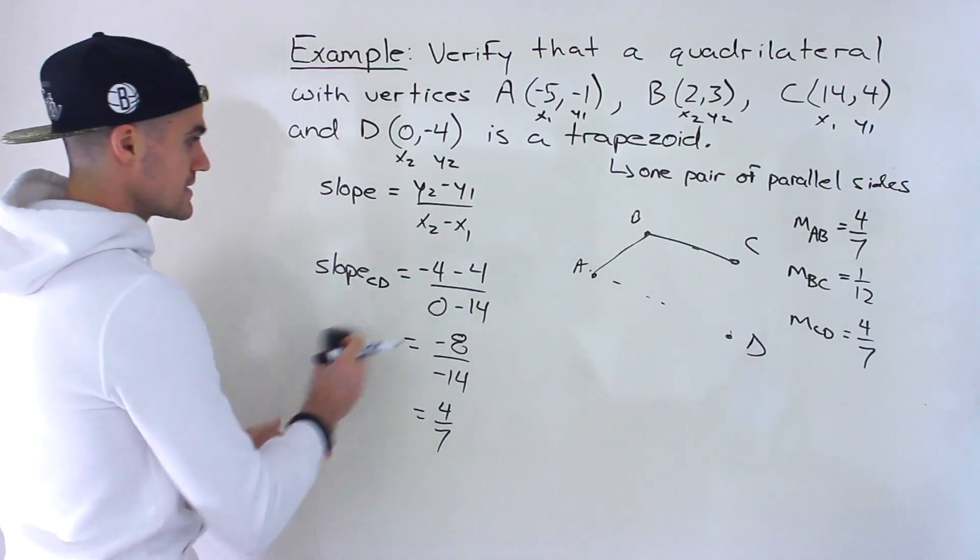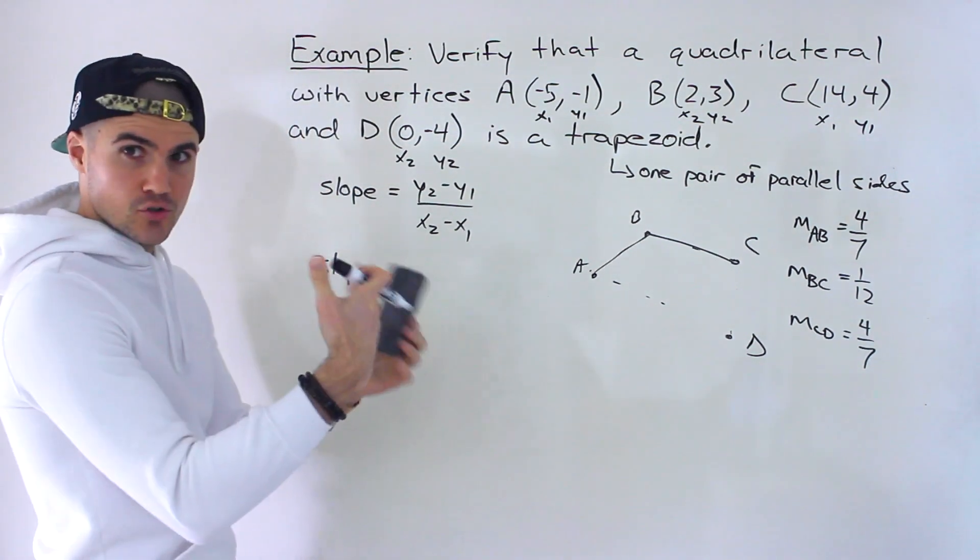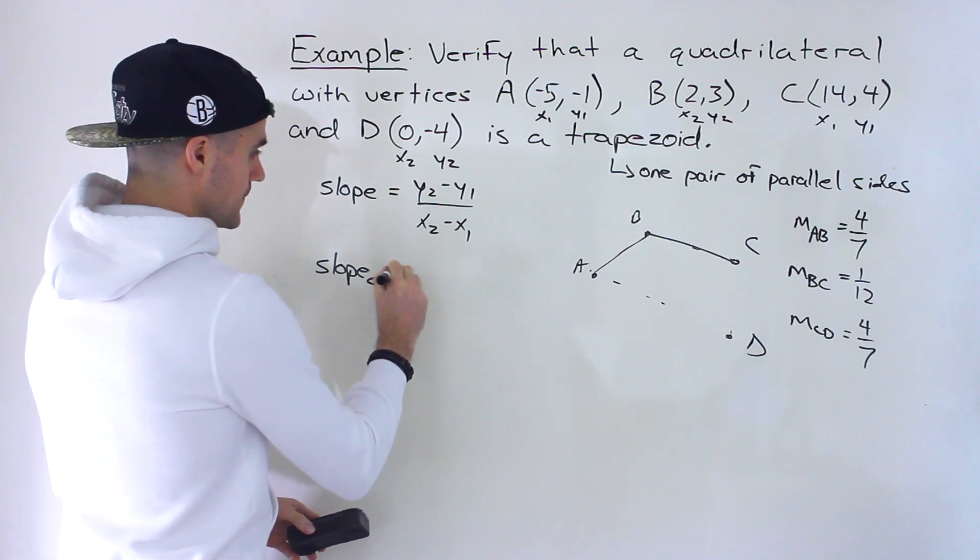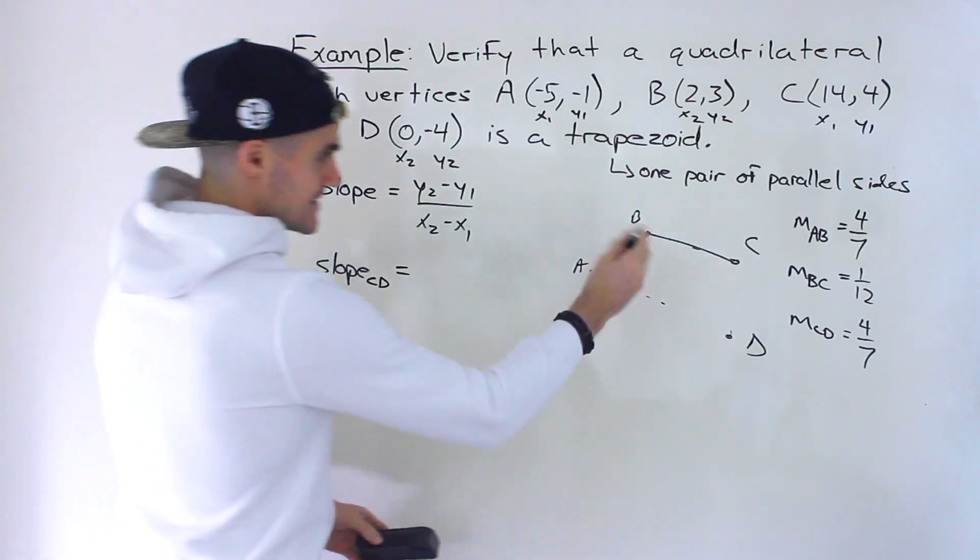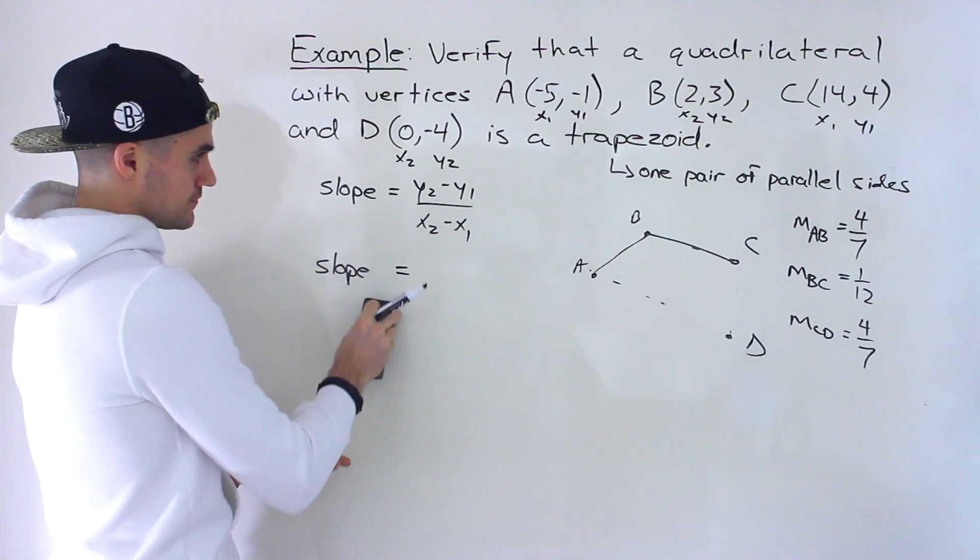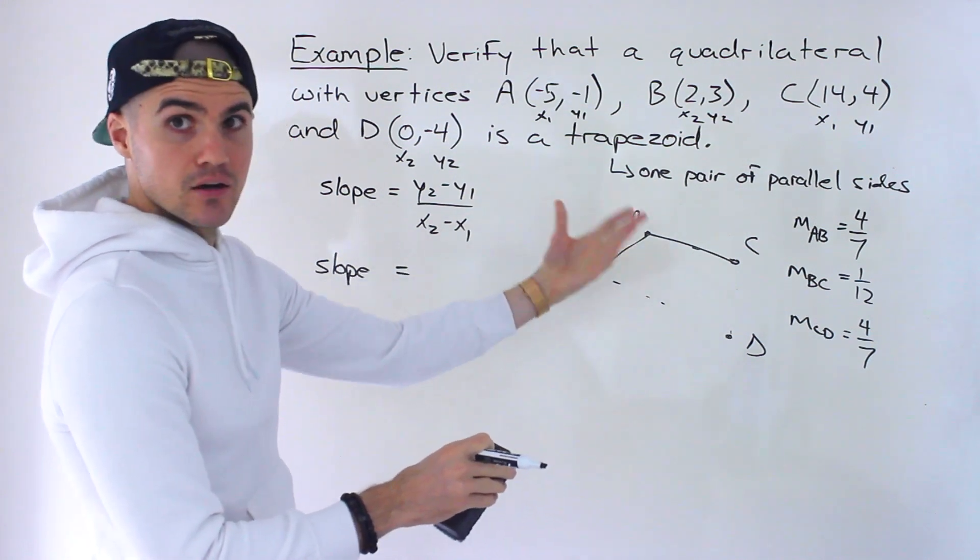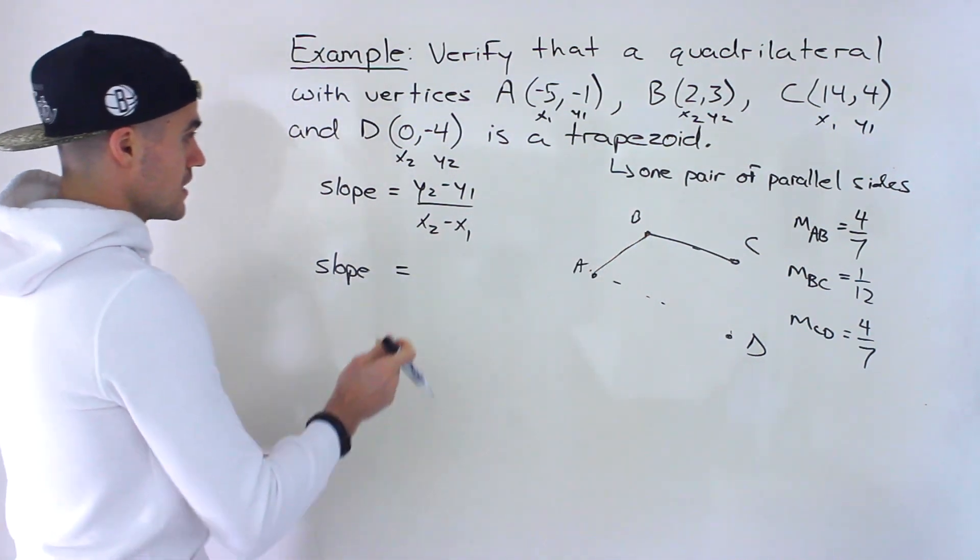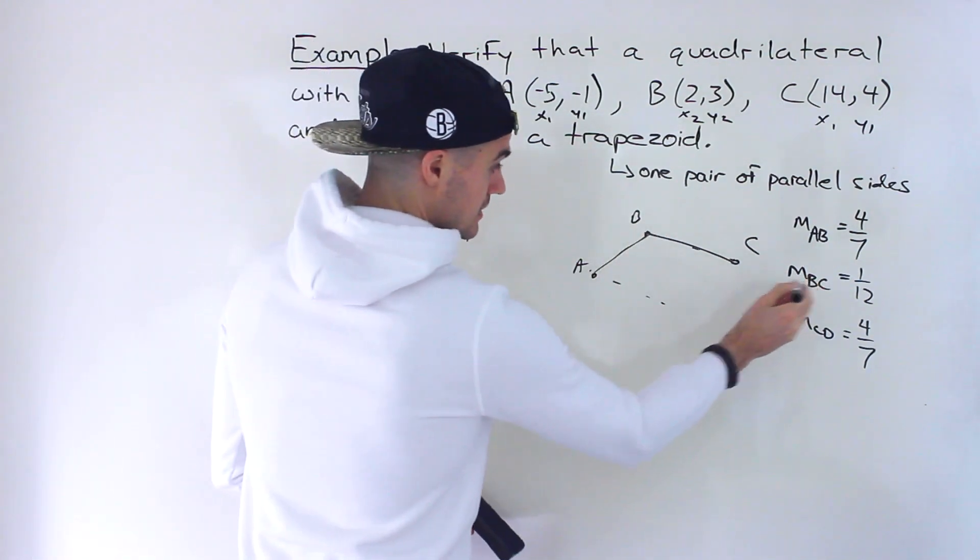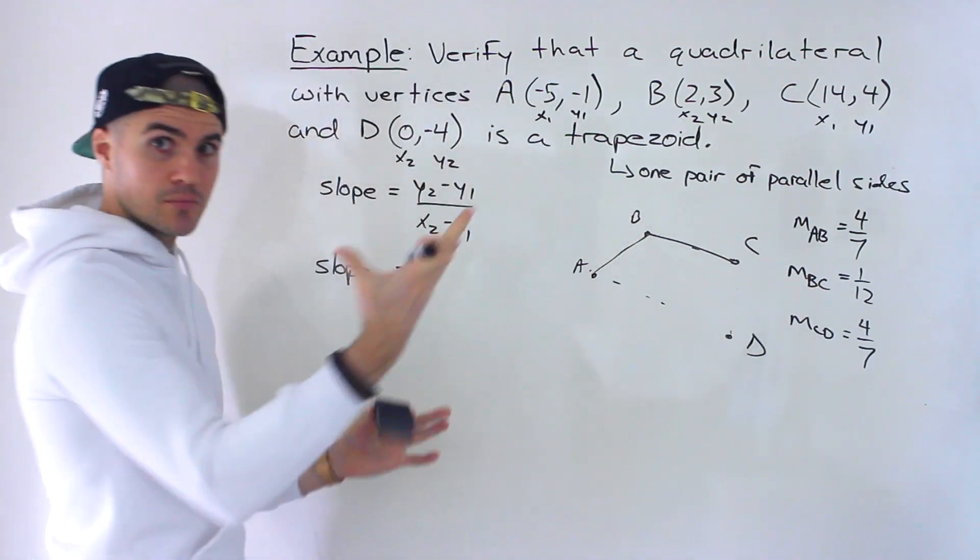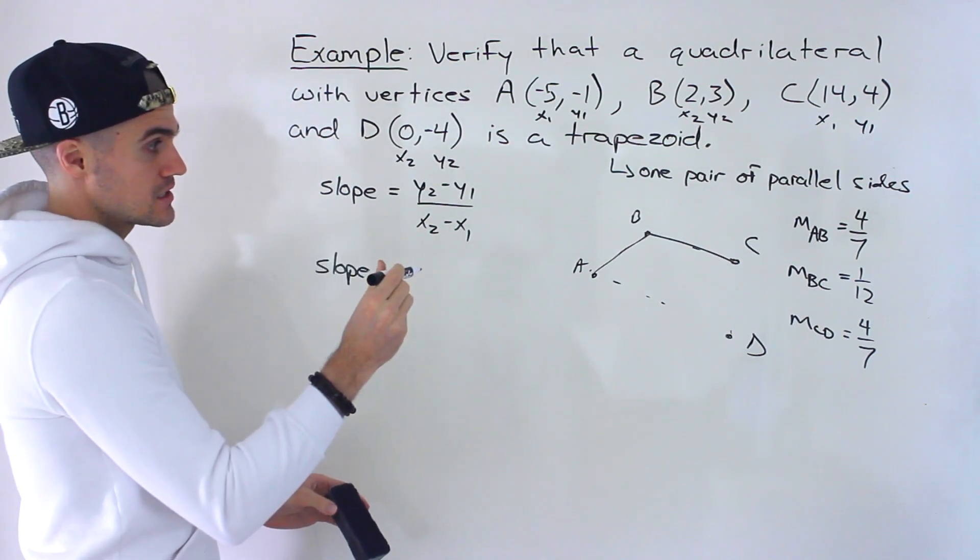We'll adjust that in a second and without the lengths we won't even be able to draw as exact of a diagram. But we know that AB and CD are the two bases. But we also have to verify that the side BC and AD are going to be non-parallel sides. So those have to have different slopes.